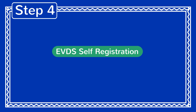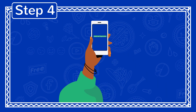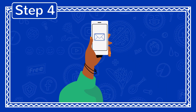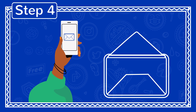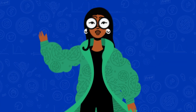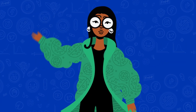Step 4: Then you will get an SMS on the cell number you put into the system to tell you that you are registered. Now you're closer to becoming part of Gen V.